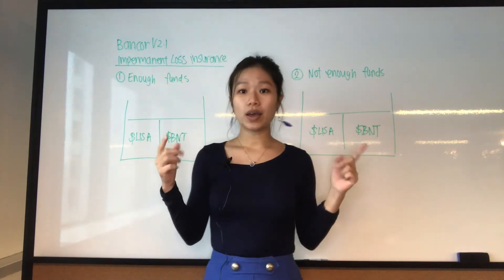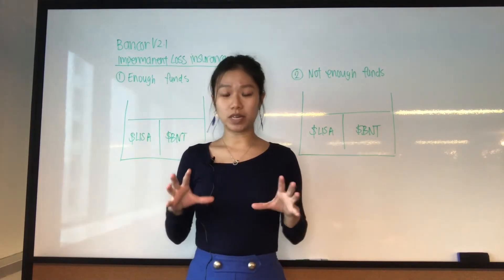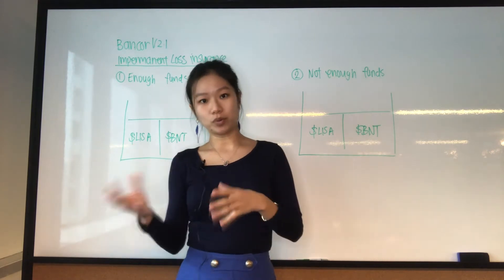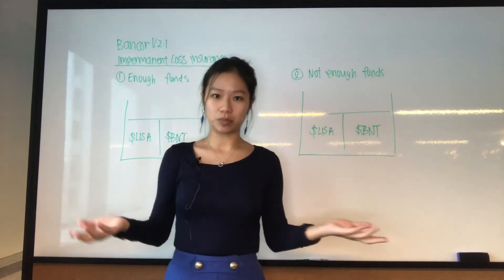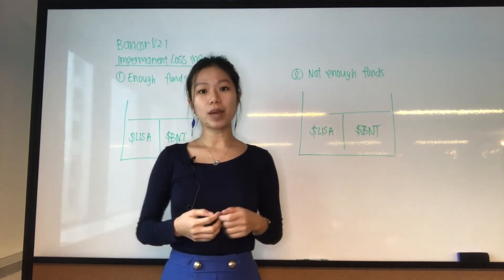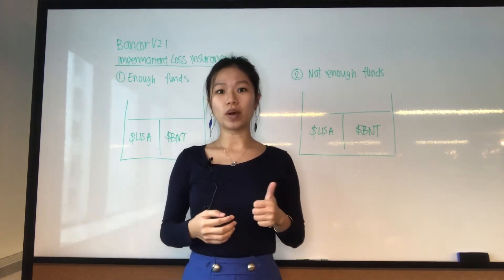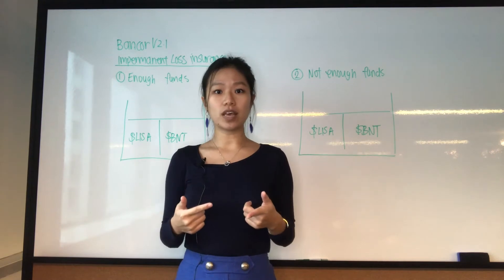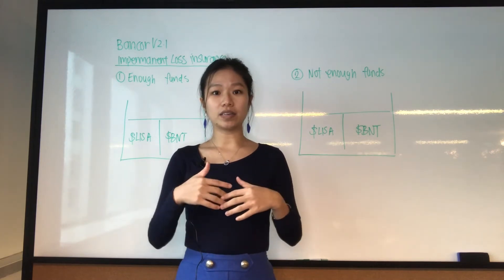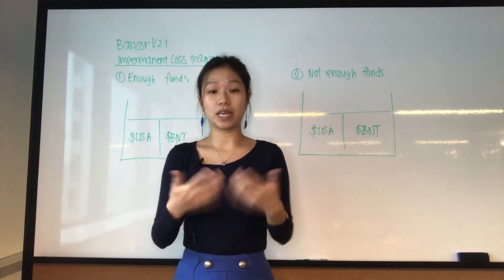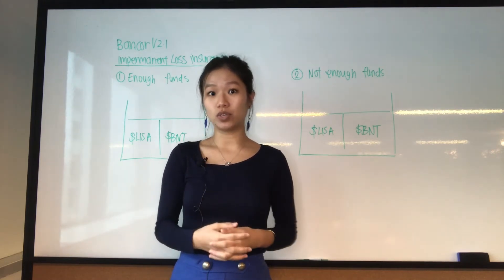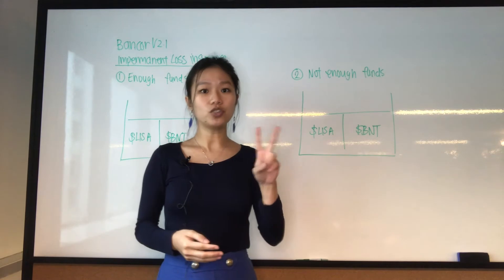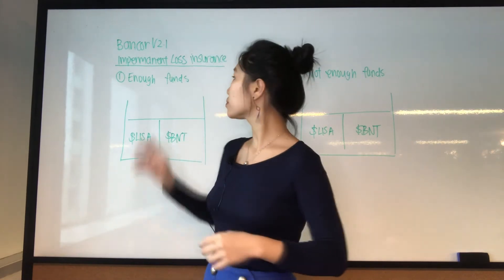In liquidity pools, you are always adding liquidity into the pool. In Bancor version 2.1, they're trying to resolve impermanent loss by giving insurance to the loss that you could incur. There are two situations where that happens.